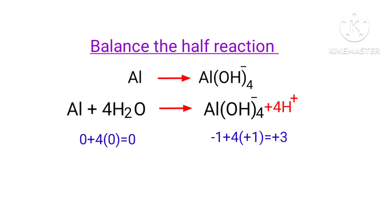As per assigning oxidation number rule, the addition of charges at the left hand side is 0 + 4(0) = 0, and the right hand side is -1 + 4(+1) = +3.